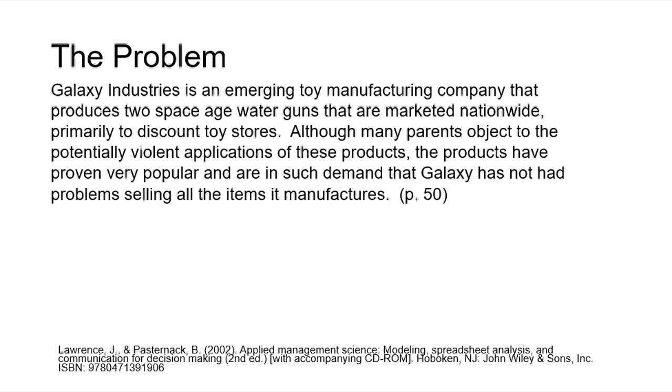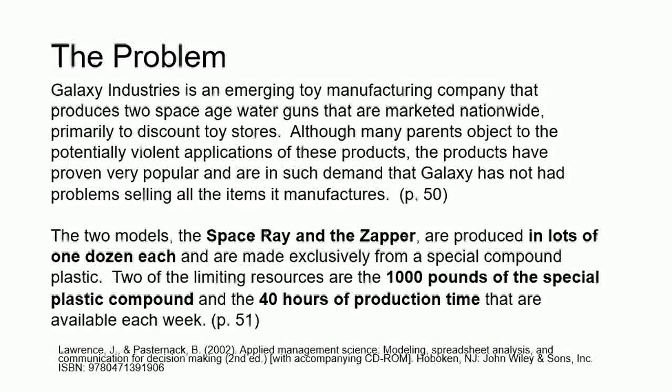From the first paragraph, there's a lot of good information about the company, but not much we can use for the optimization problem we need to solve. When we get to the second paragraph, we now know there are two models of the toy, the Space Ray and the Zapper. We notice that they're produced in lots of one dozen each.